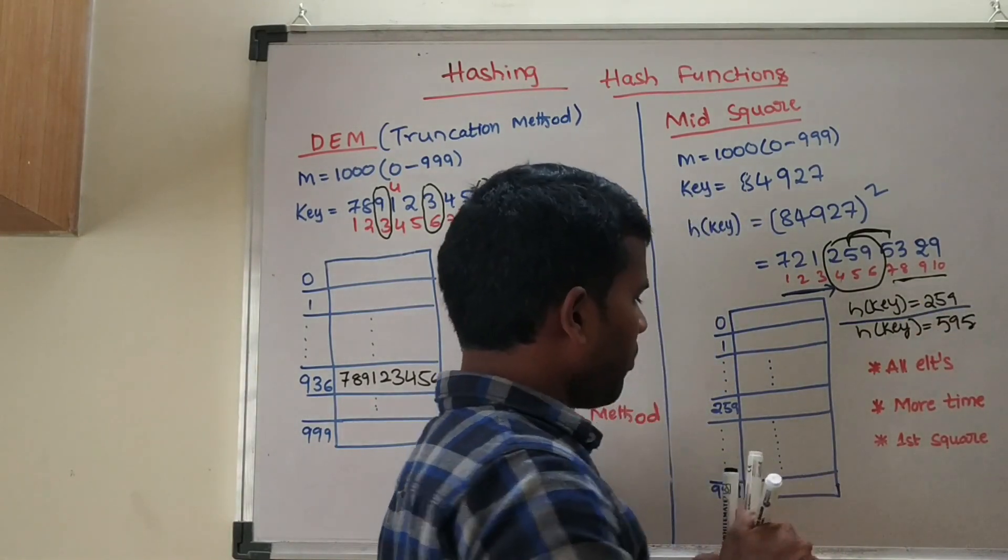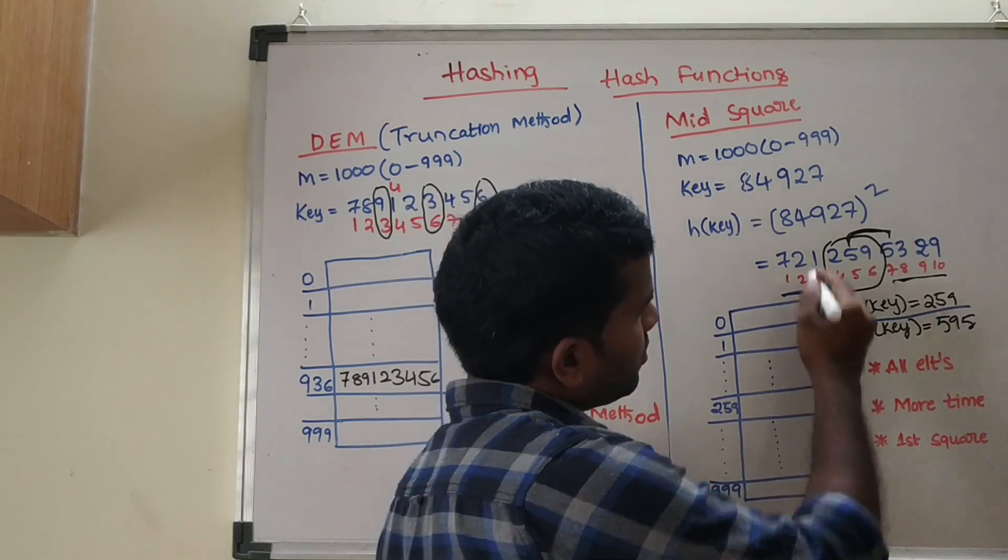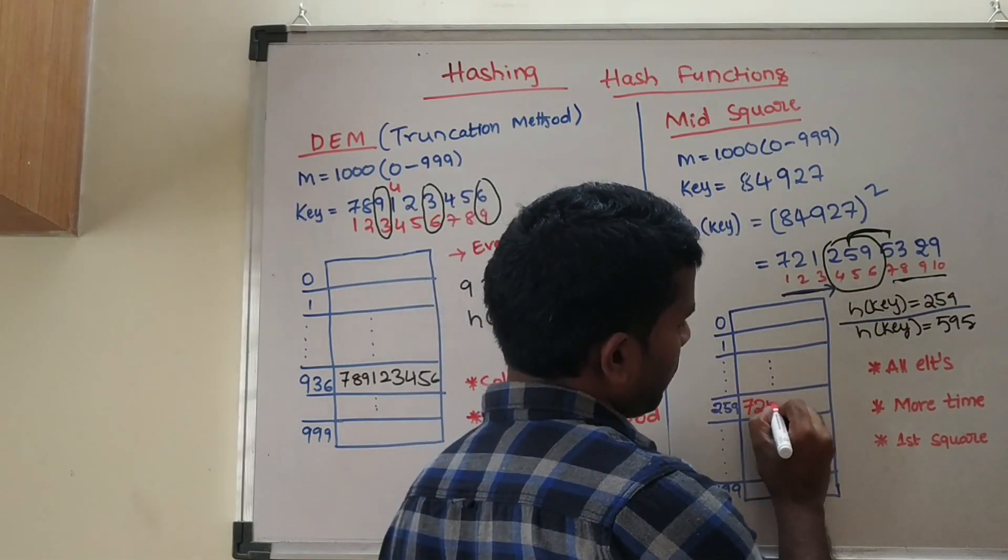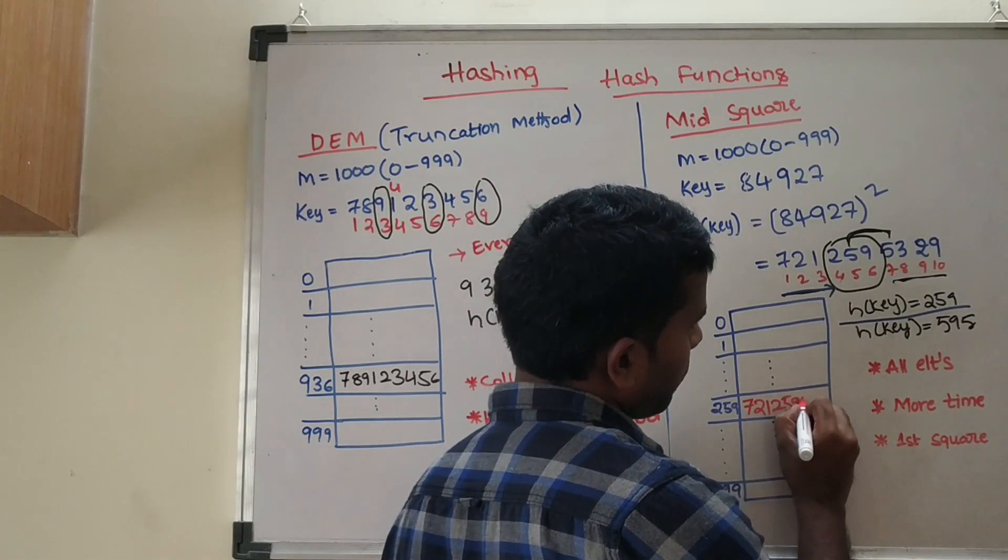So we will put this in slot 259. The key is placed at position 259 in the hash table.